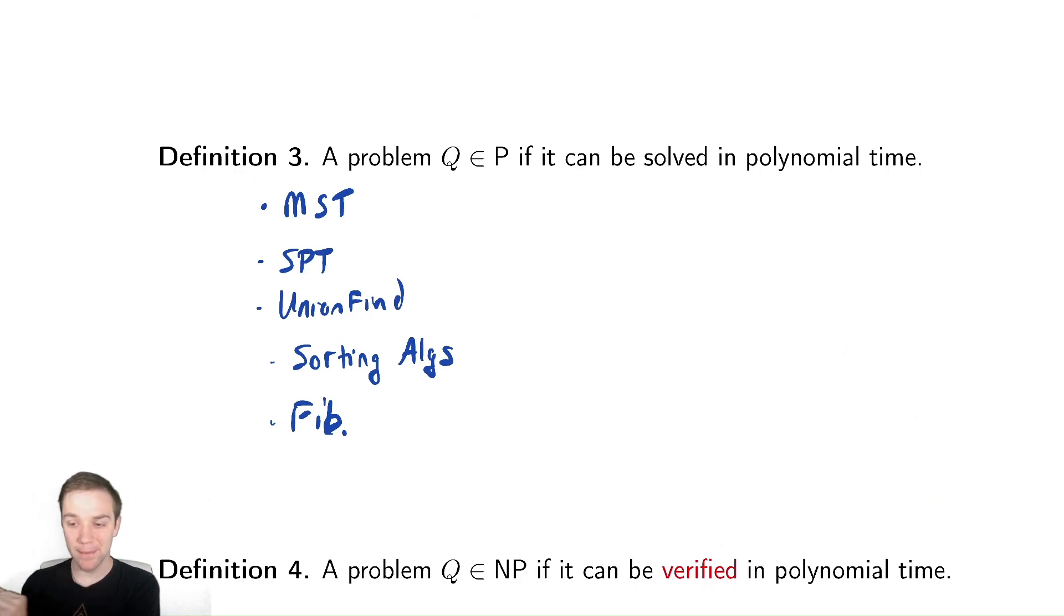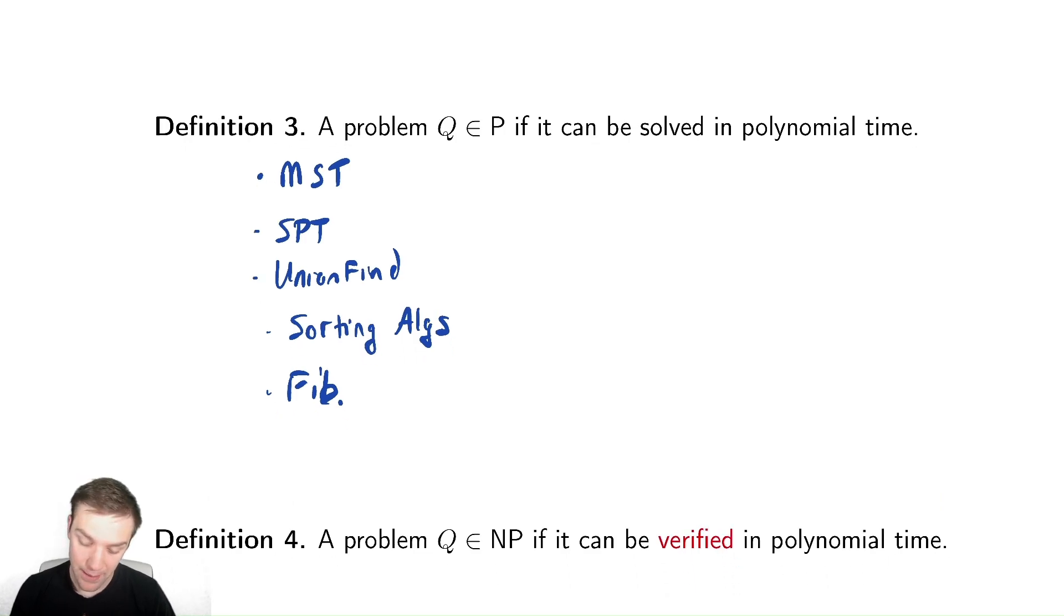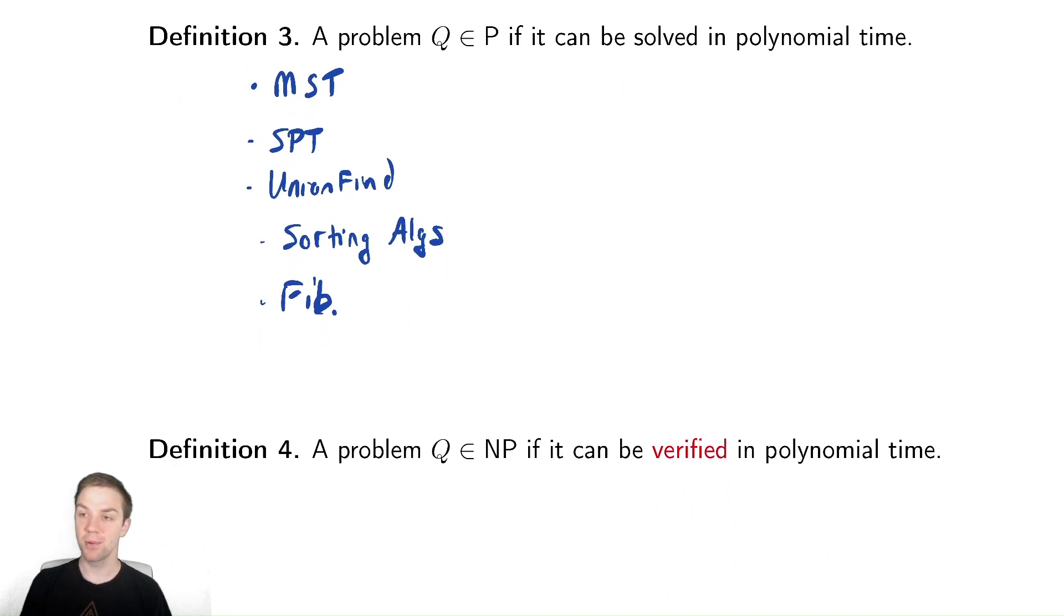A slightly more complicated class is what we call NP problems. These are problems that can be verified in polynomial time. Not necessarily that you can find the solution, but that you can check that it is correct in polynomial time. This seems like it's a minor tweak, being able to find a solution versus being able to verify a solution.